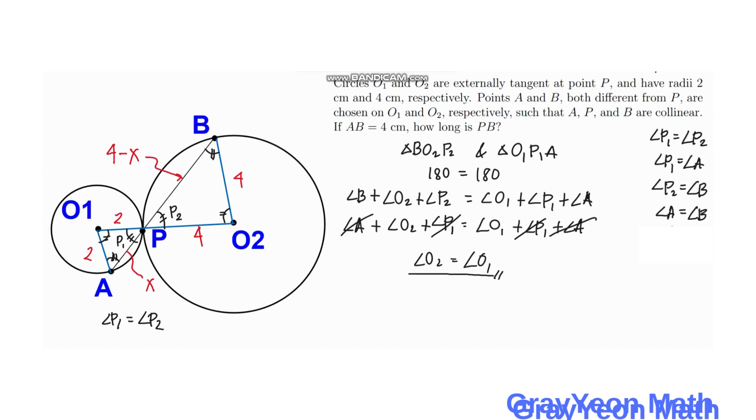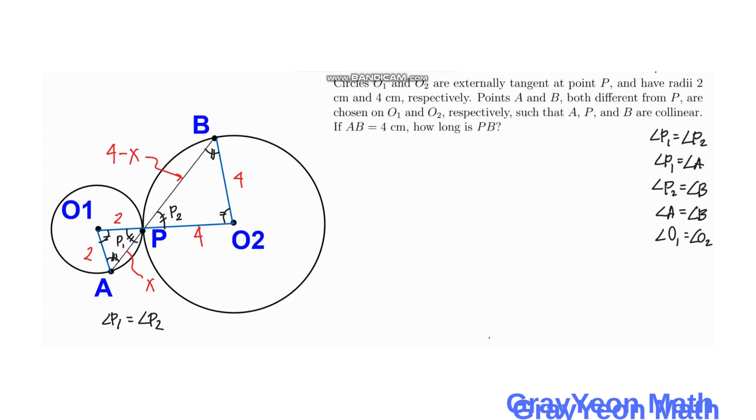And with these facts that their angles are all similar, we can say that the two triangles are similar and their sides are proportional because they have the same corresponding angles. Okay, so now knowing that the two triangles being similar, we can say that PO1 over PA is actually equal to PO2 over PB.